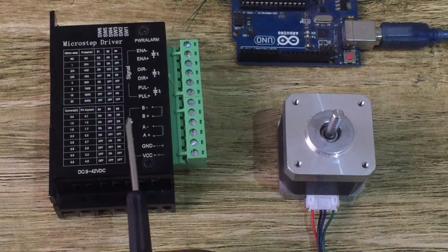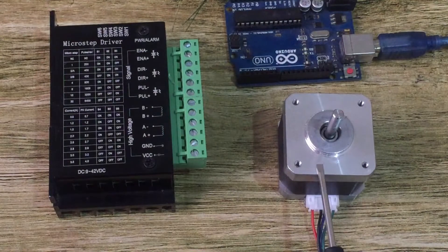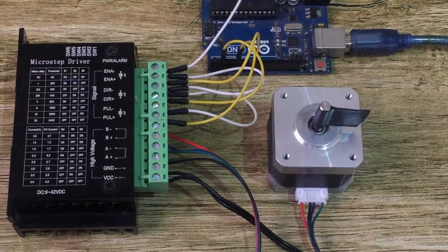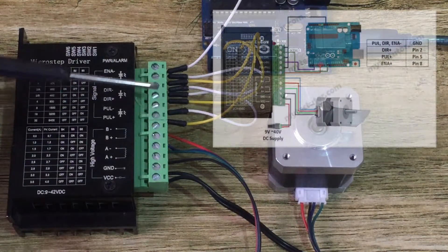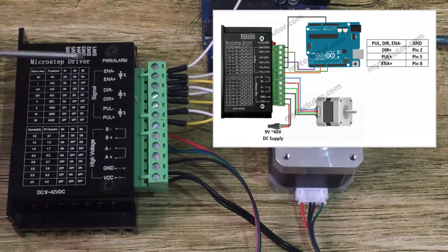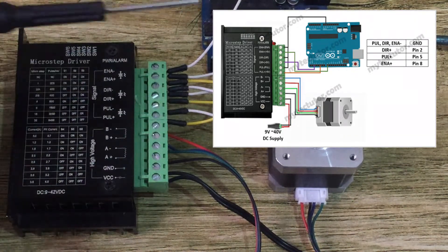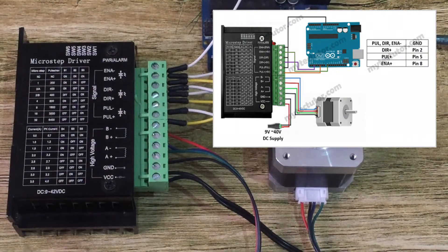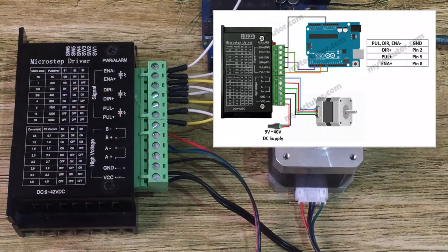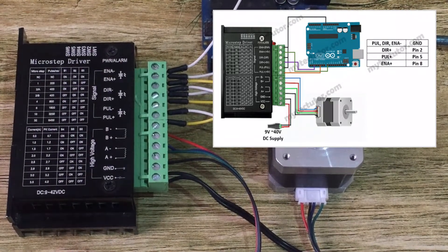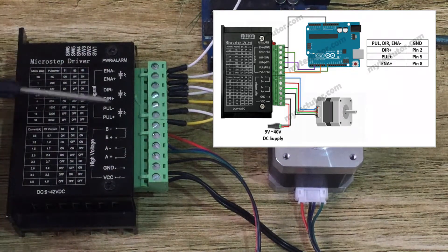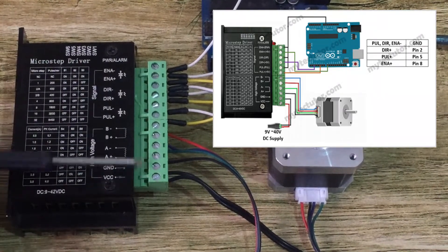Now let's look at how the TB6600 stepper motor driver is connected to Arduino and to a bipolar stepper motor. On the control side of the driver, we connect all the negative terminals for the pulse, direction, and enable pins to Arduino ground. The pulse positive connects to Arduino pin 5, the direction positive to pin 2, and the enable positive to pin 8. You can leave the enable pins floating since they are low by default, but I prefer connecting them so I can disable the motor via software if needed.